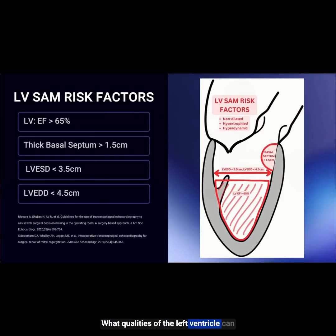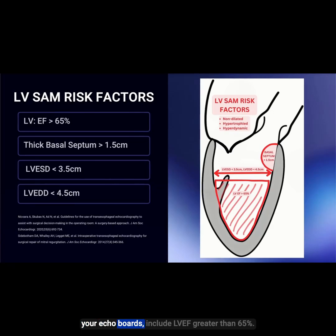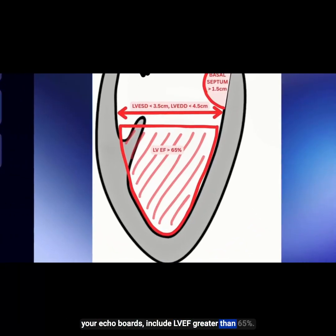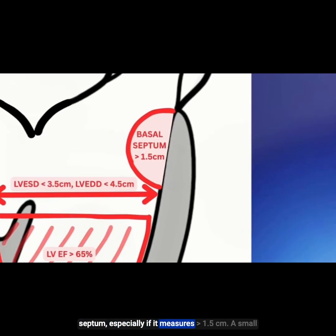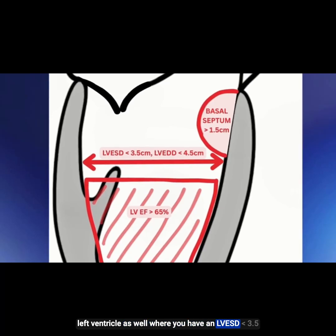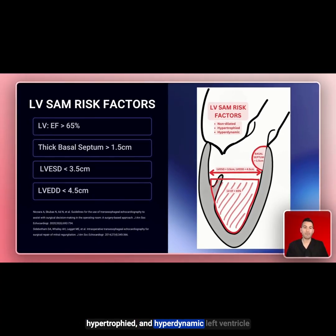What qualities of the left ventricle can predispose to SAM after mitral valve repair? Think about this as a non-dilated, hypertrophied, and hyperdynamic ventricle. Certain things that can show up especially on your echo boards include: LVEF greater than 65% — that's the hyperdynamic ventricle — a thick basal septum especially if it measures greater than 1.5 centimeters, a small left ventricle with an end systolic diameter less than 3.5 centimeters, or a left ventricular end diastolic diameter less than 4.5 centimeters.